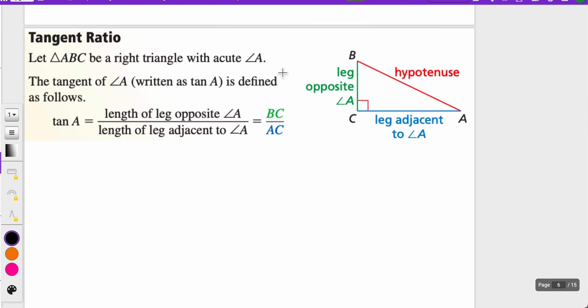Here's a picture of what that tangent ratio could look like. For instance, if ABC is a right triangle, and the acute angle A is our focus, the tangent of angle A, written as tan A, is defined as follows.